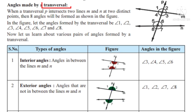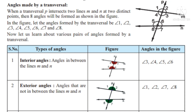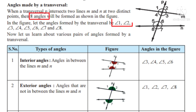Angles made by a transversal. When a transversal P intersects two lines M and N at two distinct points, then eight angles will be formed as shown in the figure: angle 1, angle 2, angle 3, angle 4, angle 5, angle 6, angle 7 and angle 8.